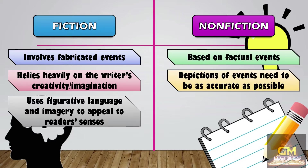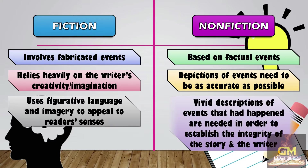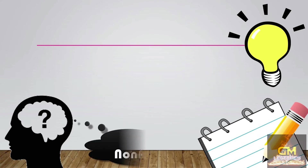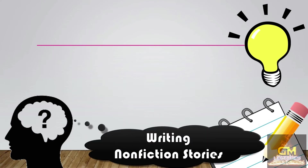As such, it is important that depictions of events need to be as accurate as possible, as vivid descriptions of events that had happened are needed in order to establish the integrity of the story and the writer. Now that we have talked about the differences between fiction and non-fiction, we're going to focus on writing non-fiction stories.